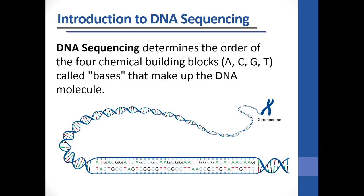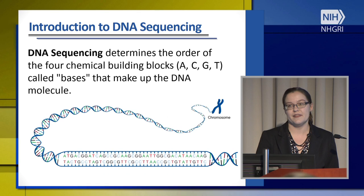To get started, we'd like to tell you a little bit about DNA sequencing, which all of these projects make use of. DNA sequencing determines the order of the four chemical bases, or ACGTs, that make up a DNA molecule. You can use a number of different technologies or devices in order to perform this DNA sequencing to determine the bases' order.